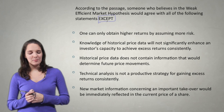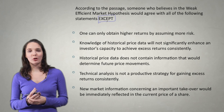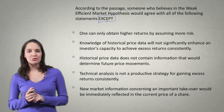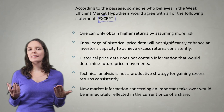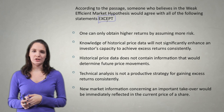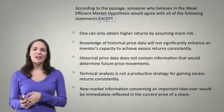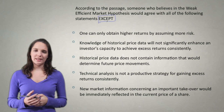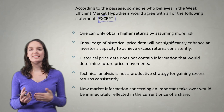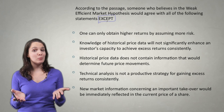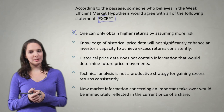Let's start with answer choice A: 'One can only obtain higher returns by assuming more risk.' Where did we read about assuming more risk? That was in the first paragraph — the introductory paragraph. Assuming more risk to get higher returns is something that's basically assumed by all versions of the efficient market hypothesis. That's the whole point of the efficient market hypothesis. So someone who believes in weak EMH would also have to believe this, and we're going to eliminate answer choice A because it applies to all three versions.